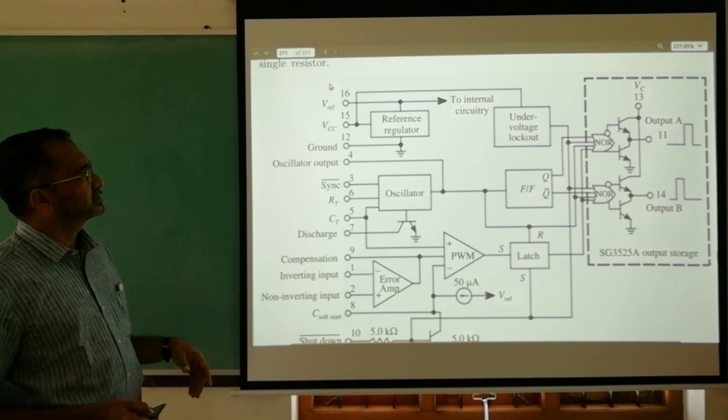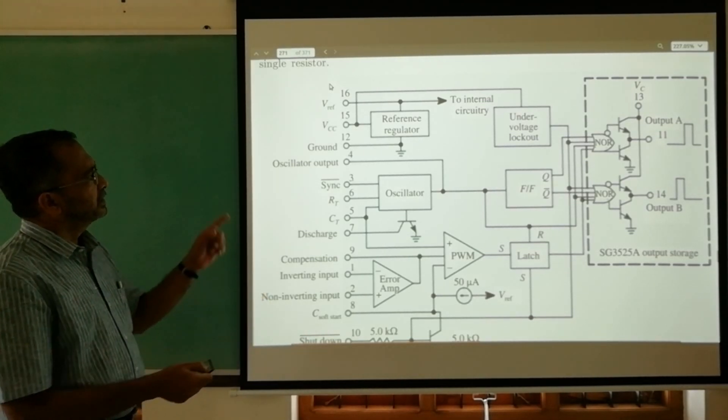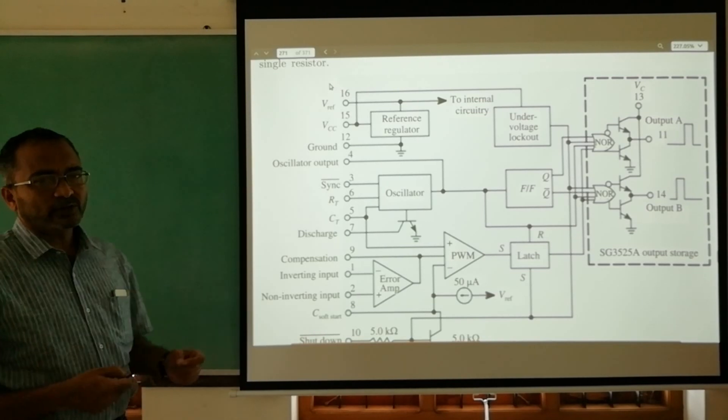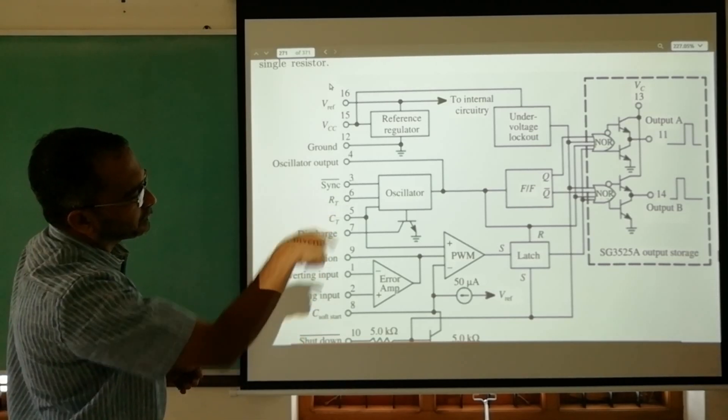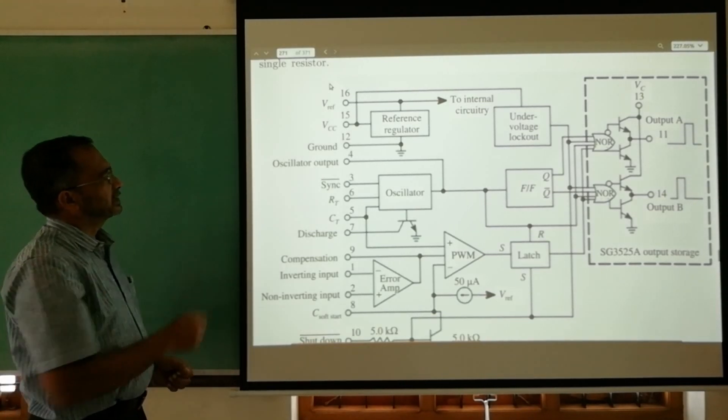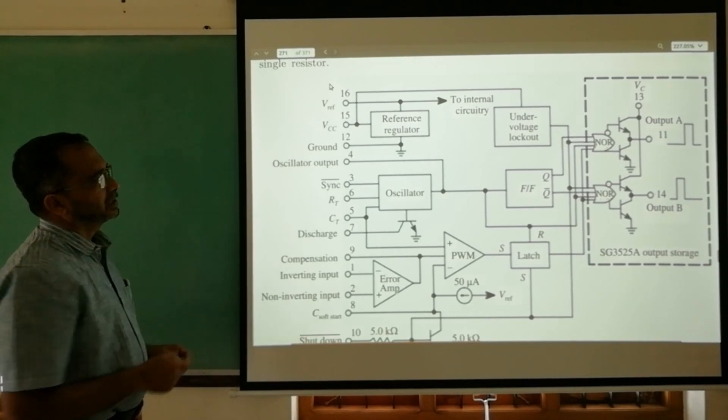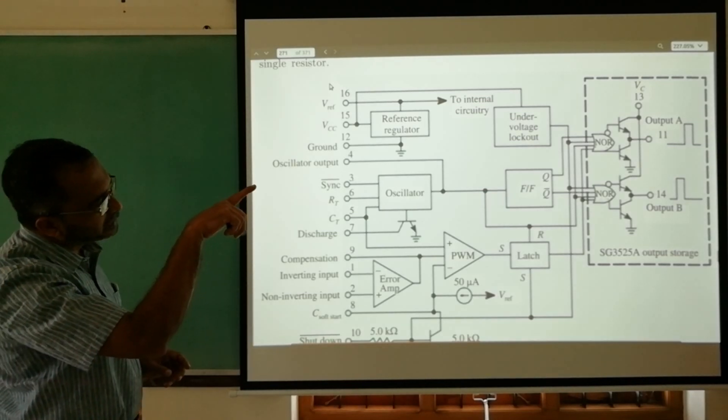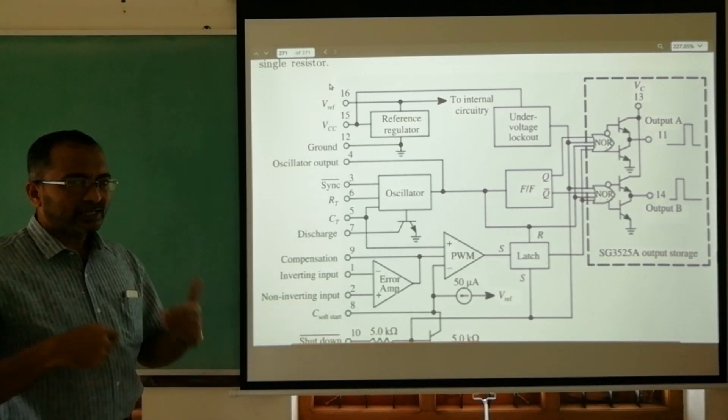We shall just have a glance on this. Terminal number three in this IC generates a reference voltage of about 5.1 volts. By varying that voltage, the duty cycle of the output waveform obtained from pin number 11 and pin number 14 is varied. Then there's biasing supply VCC, ground, and oscillator output from pins 11 and 14.